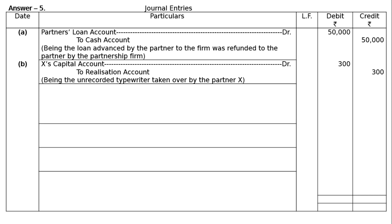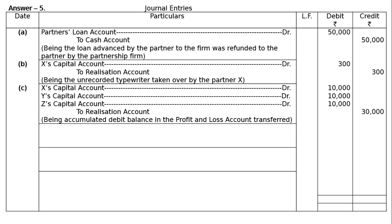Part C: Undistributed debit balance of the Profit and Loss Account of rupees 30,000. The firm had three partners: X, Y, and Z. Entry: X's Capital Account debited rupees 10,000, Y's Capital Account debited rupees 10,000, Z's Capital Account debited rupees 10,000 — to Realization Account rupees 30,000, being the accumulated debit balance in the Profit and Loss Account transferred.